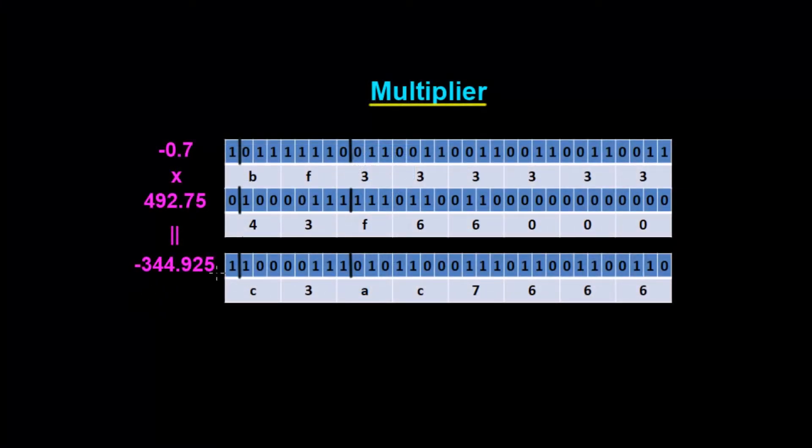This is our answer here in our 32-bit binary floating point which is written in hex here. Let's actually put this value here into our little calculator and we'll see what that number is and see if it's -344.925. Of course we know it's not going to be exact, it's going to be close to it because of this approximation here with this number.